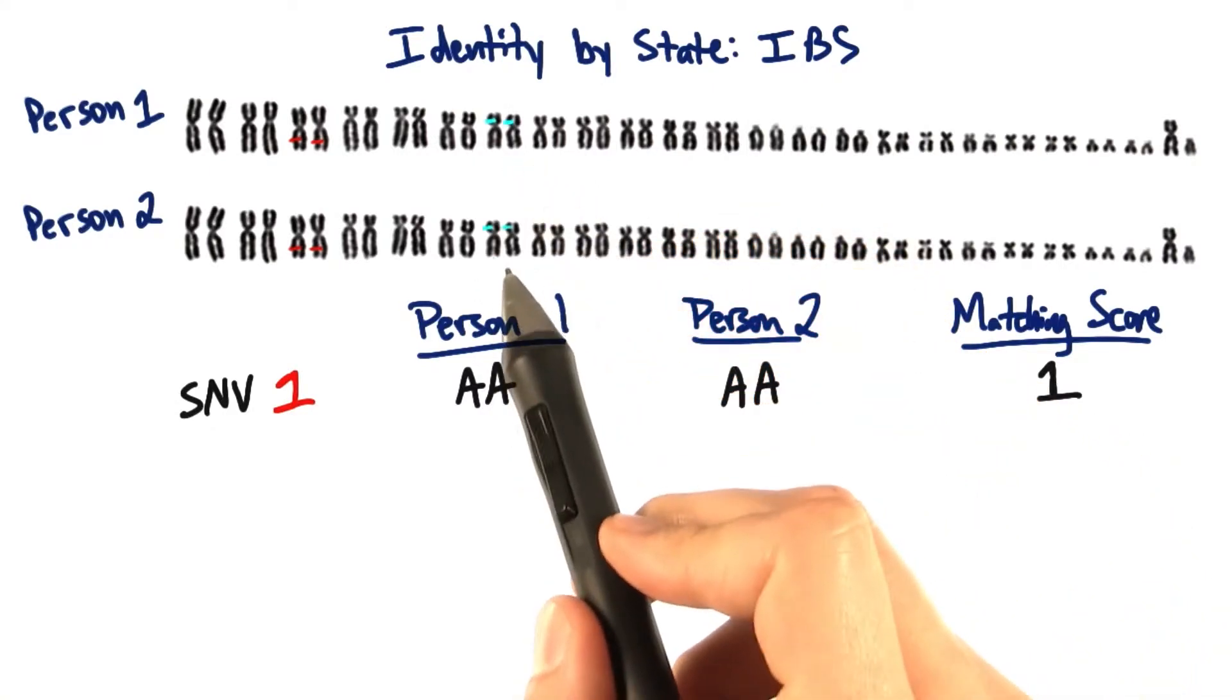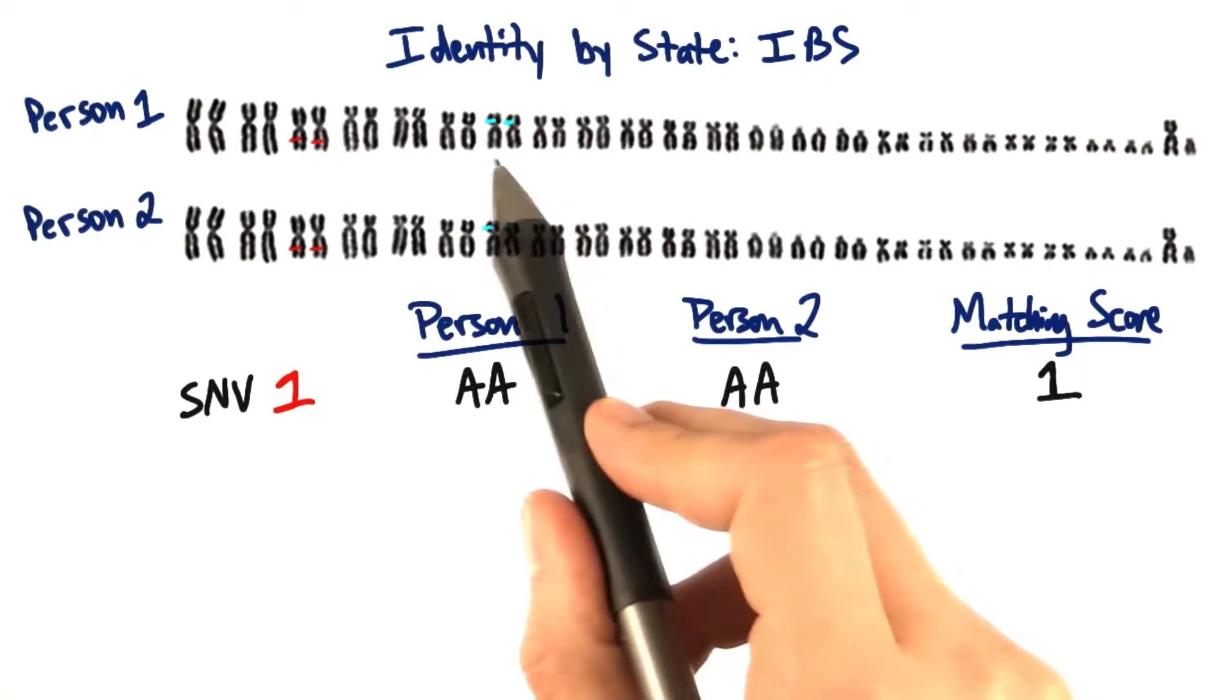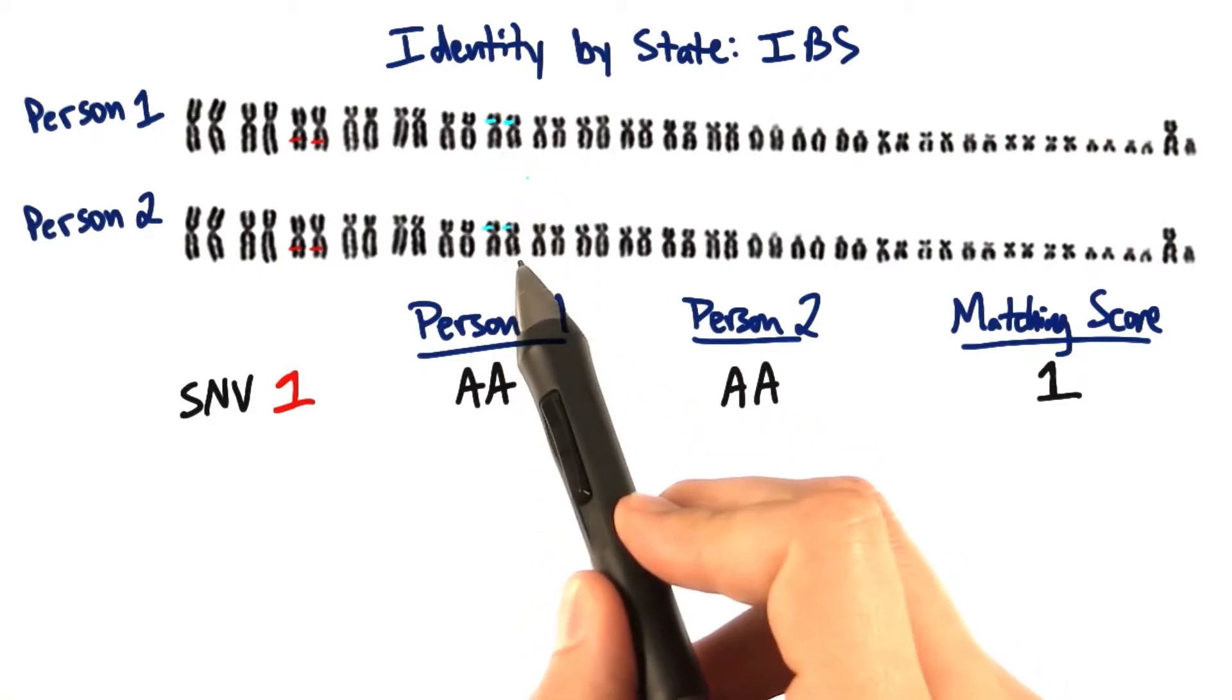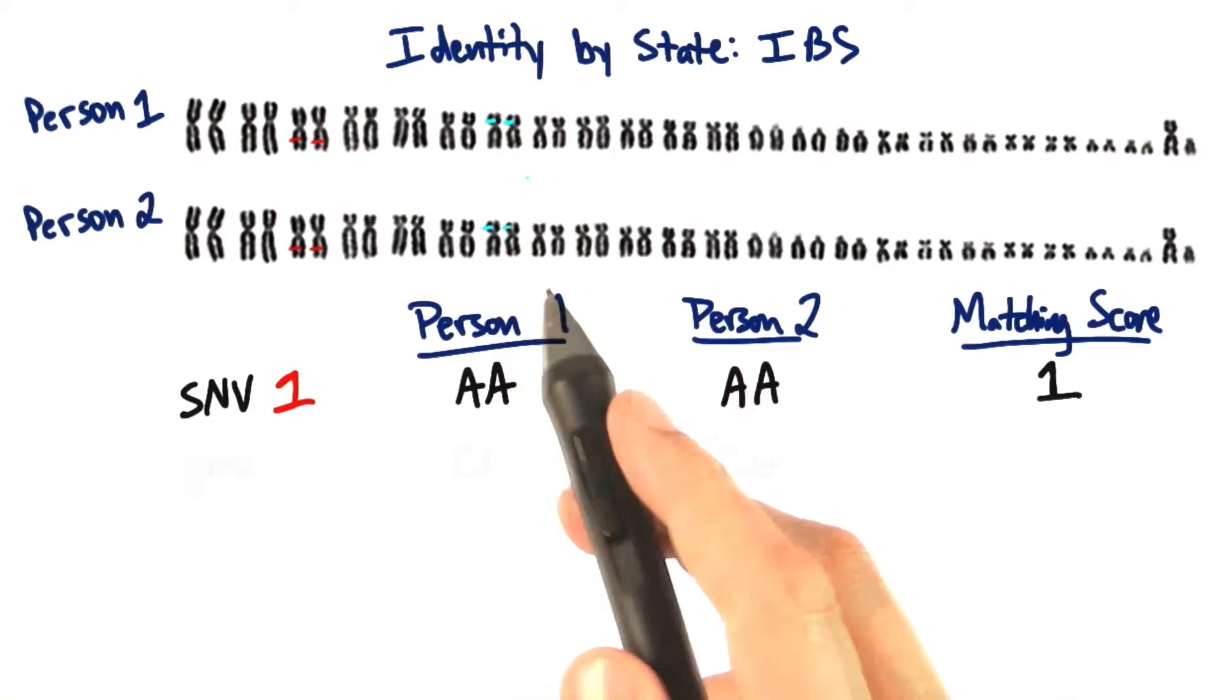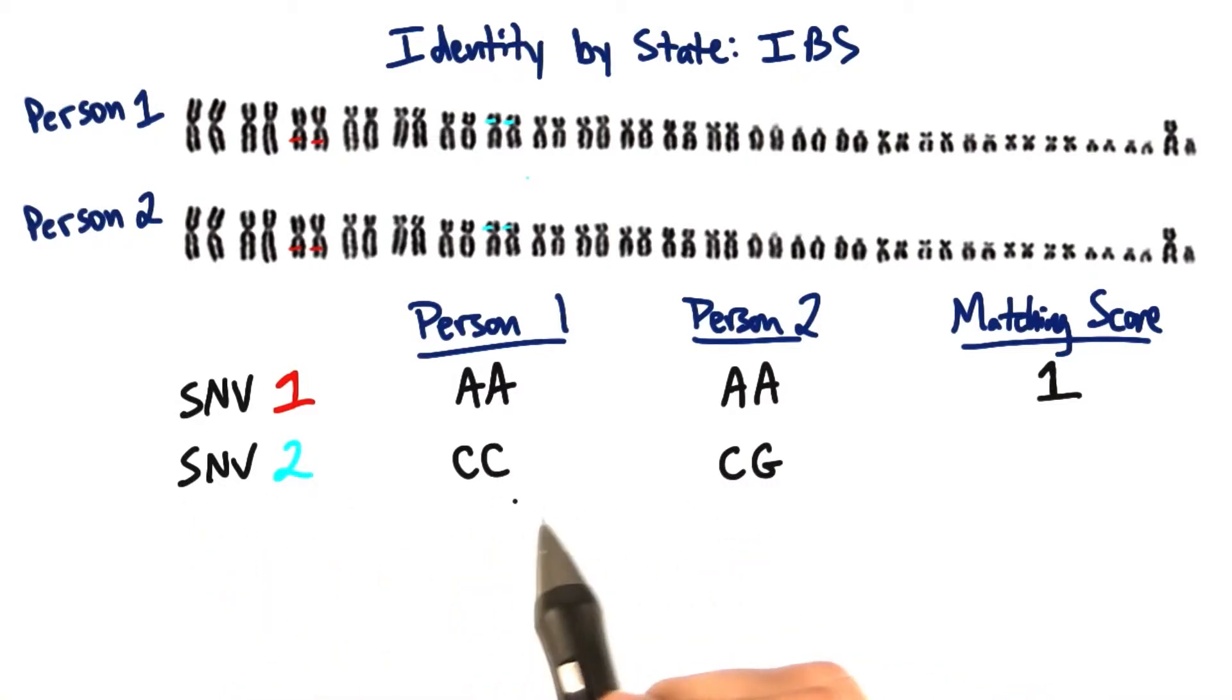Now let's take a look at a different SNV on chromosome 7. Here I've marked it on the actual chromosome 7 for person 1 and person 2. Now for the second SNV, person 1 is homozygous for the C allele, but person 2 is heterozygous with a C and a G allele.